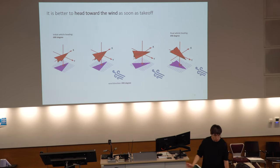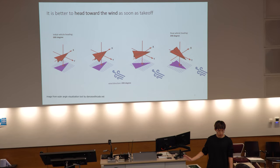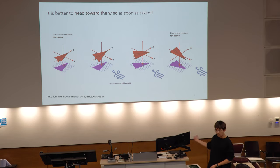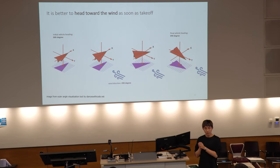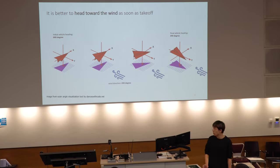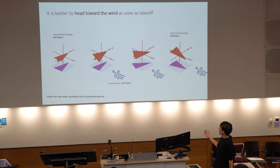The solution is called weathervaning. As soon as the aircraft takes off, it's better for it to head toward the wind. Since my topic is focused on tiltrotor fixed-wing aircraft, if the aircraft heads toward the wind, it can generate lift and also reduce the drag on the main wing.